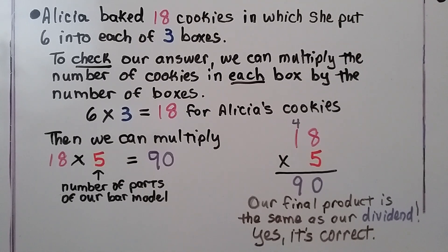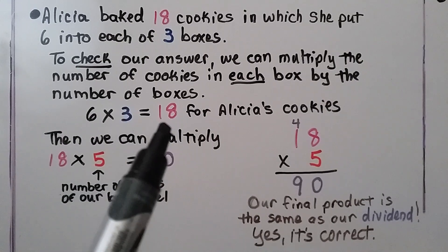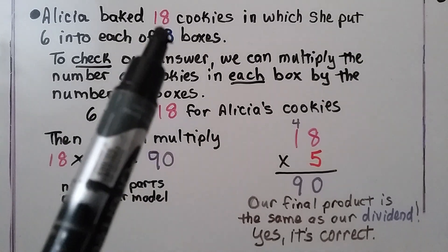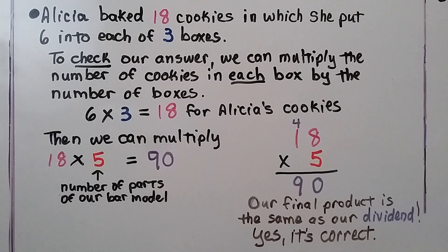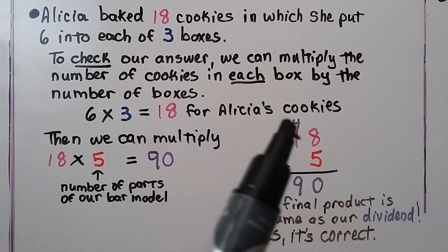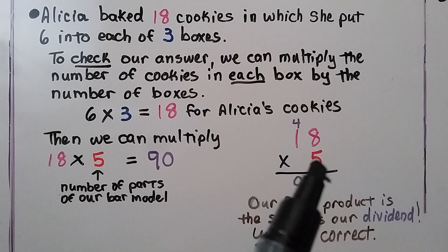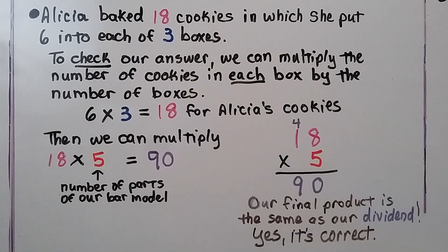To check our answer, we can multiply the number of cookies in each box by the number of boxes. There were 6 in each box. She has 3 boxes. That's 18 for Alicia's cookies. That's correct. Then we can multiply the 18 that Alicia made times 5, which was the number of parts of our bar model. 5 times 8 is 40. We regroup the 4 and put the 0 down. 5 times 1 is 5, plus the 4 that we regrouped is 9. Our final product is the same as our dividend, so yes, it's correct.